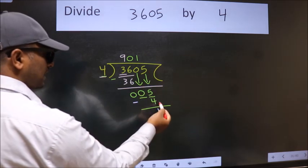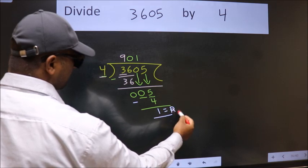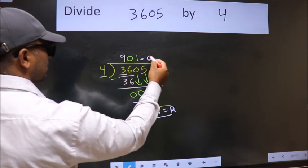No more numbers to bring it down, so we stop here. This is our remainder and this is our quotient.